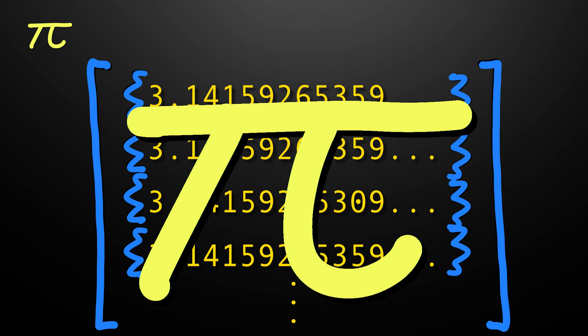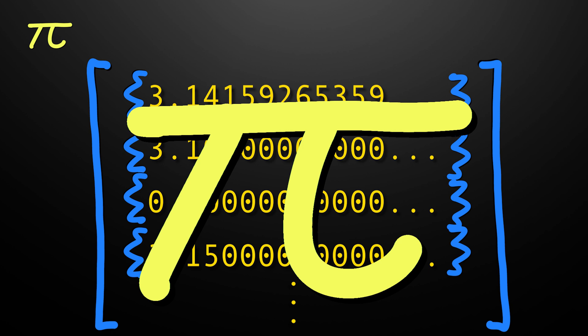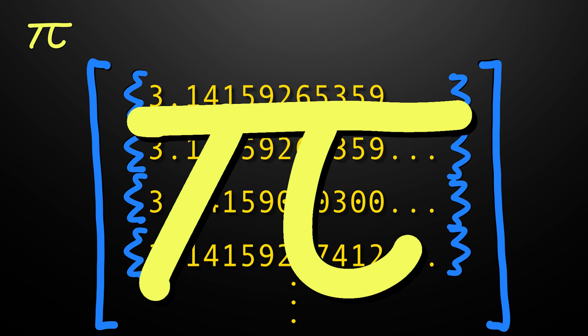For real numbers in general we consider all equivalence classes of Cauchy sequences of rational numbers.